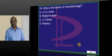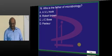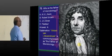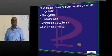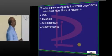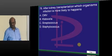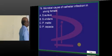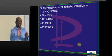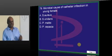Who is the father of microbiology? We have to remember our forefathers — that's how you get into MD. Anton van Leeuwenhoek is the father of microbiology. Cutaneous larva migrans is caused by Ancylostoma braziliense. After kidney transplantation, the most common cause of infection is CMV, cytomegalovirus. Catheter-induced infection — any blood-borne infection — Staphylococcus aureus is the answer.